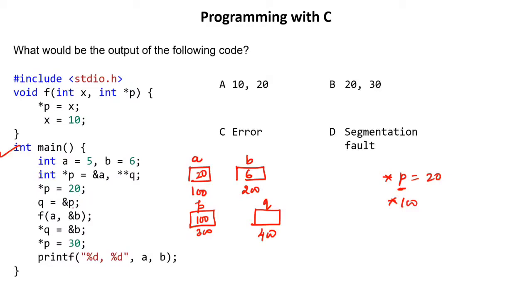Q holds the address of P, which is correct because Q is a double pointer and it holds the address of the single pointer P. The address of P is 300, so Q will have 300 stored in it.